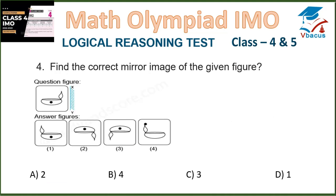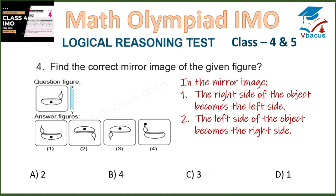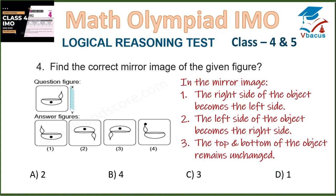Question 4. Find the correct mirror image of the given figure. As we know, in the mirror image the right side of the object becomes the left side, the left side becomes the right side, and the top and bottom remain unchanged. This is an image of Diyah. In the first option, the right side has gone to the left side — this may be correct. Checking the other options, they have incorrect dot placement. So the correct option is D.